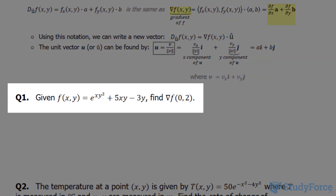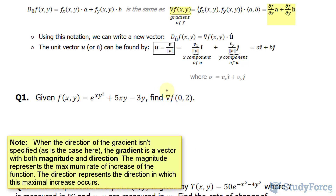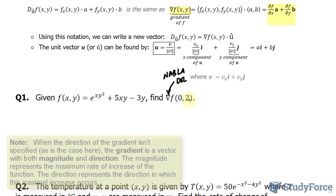Question one reads: given the function f at x, y is equal to the expression on the right side, find the gradient of the function at zero and two. This symbol here is called nabla or del, and we need to find the gradient evaluated at zero and two.